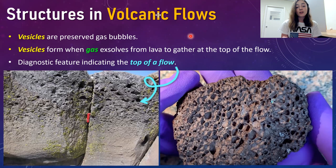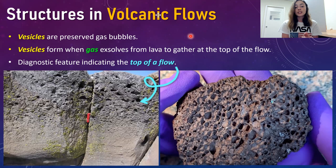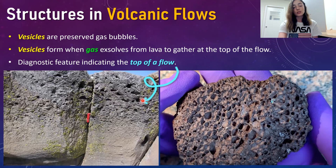Another structure I also mentioned in the textures video is vesicles — basically just preserved gas bubbles. Vesicles form when gas exsolves from the lava and gathers at the top of the lava flow. This is a diagnostic feature indicating the top of the flow, similar to how columnar jointing column thickness can indicate base versus top. If you find vesicular igneous rock overlying non-vesicular rock, the vesicular part is the top of the flow, and the non-vesicular part is the base.